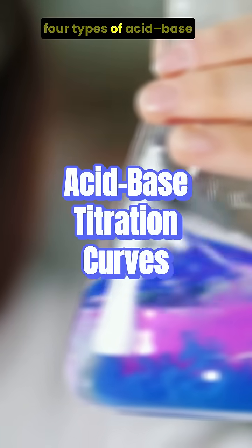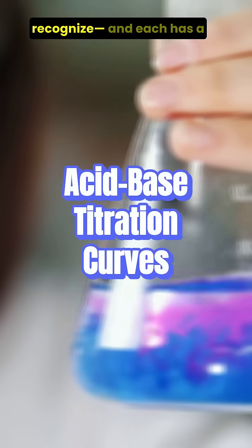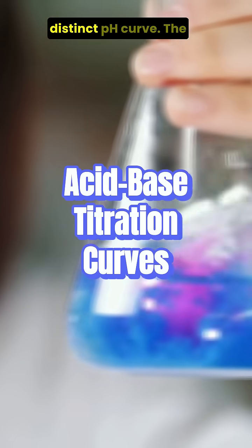In AP chemistry, there are four types of acid-base titrations you need to recognize, and each has a distinct pH curve.